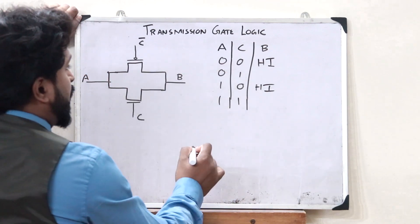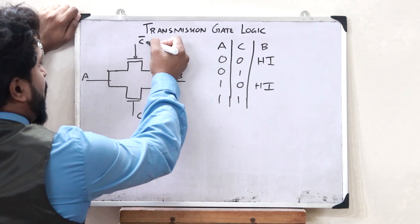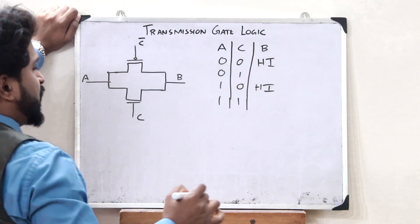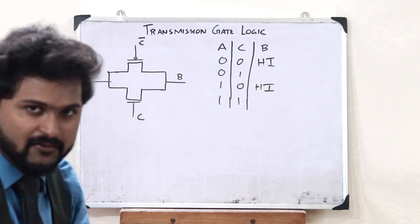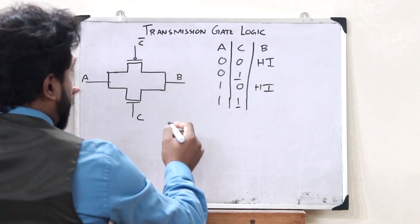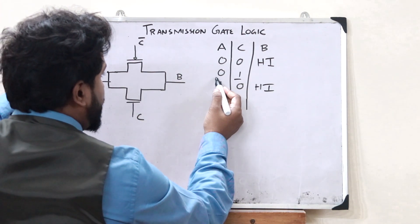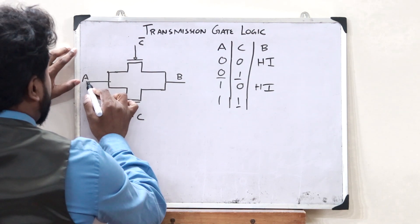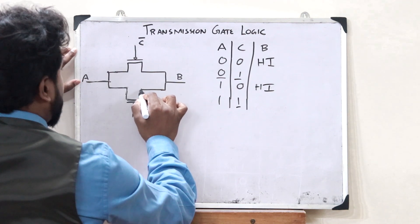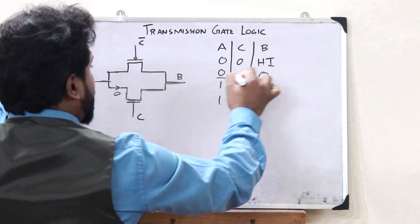When the control input C is 1, the NMOS transistor is on. C complement becomes 0, and when a PMOS transistor receives 0 at its gate, it is also on. So both transistors are on and the gate passes the signal. When the input A is 0, this input passes through the NMOS transistor and we get an output of 0.